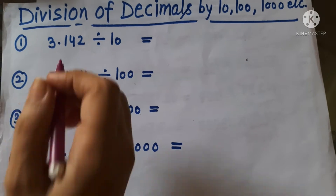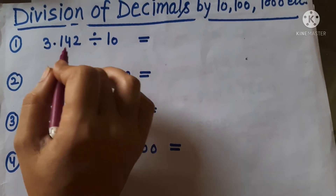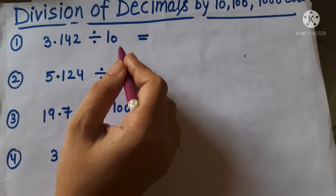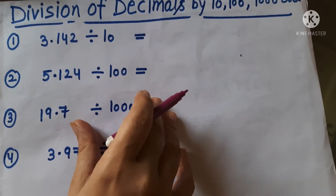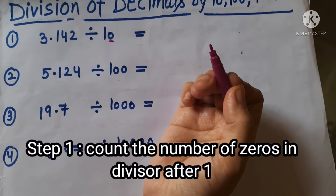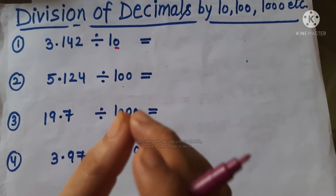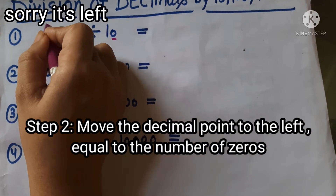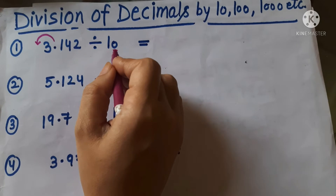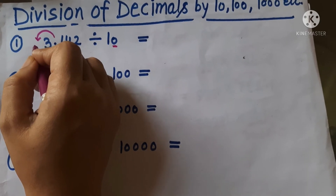Let's take the first example. The first example is 3.142 which is going to be divided by 10. We can do this like a simple division of decimals by a whole number, but since it is divided by 10, we will make it simpler. In the first step, you have to count the number of zeros. Here the number of zeros is 1. In the second step, you just have to move your decimal to the left side, equal to the number of zeros. Here the number of zeros is 1, so our decimal in the answer will shift to the left side.